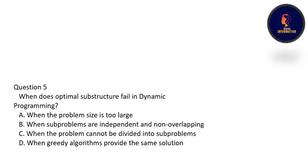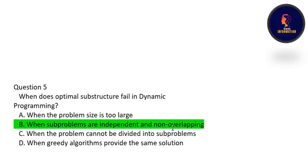Next question: when does optimal substructure fail in DP? Optimal substructure fails when subproblems are independent and non-overlapping. When subproblems are independent and non-overlapping, optimal substructure will fail in DP.